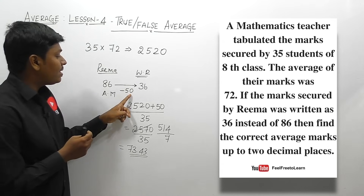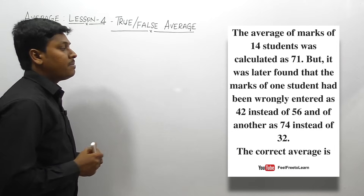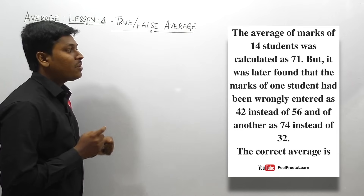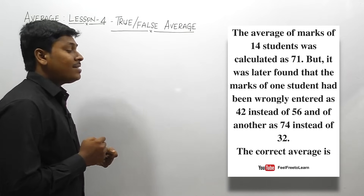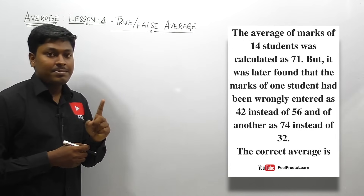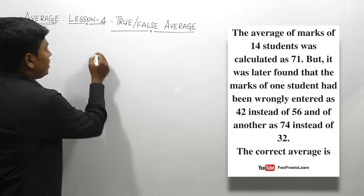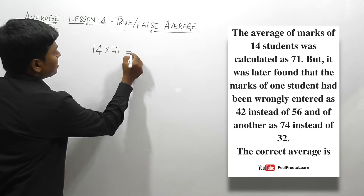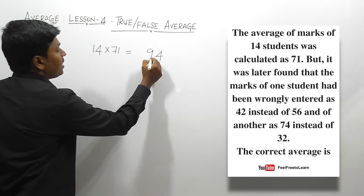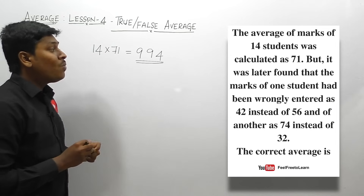Question number three: the average marks of 14 students was calculated as 71, but it was later found that the mark of one student was wrongly entered as 42 instead of 56, and another as 74 instead of 32. Find the correct average. Unlike the previous two questions, here two students' marks were wrongly entered. Total marks = 14 × 71 = 994.